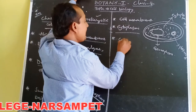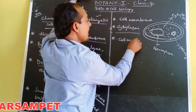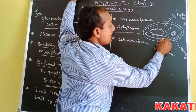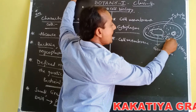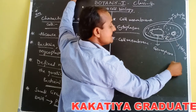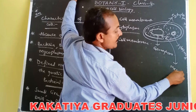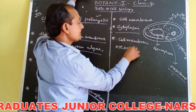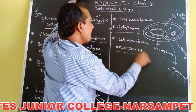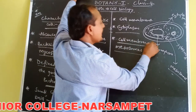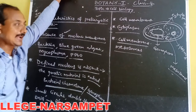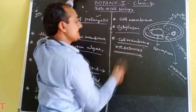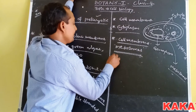The cell membrane forms infoldings called invaginations. These invaginations are called mesosomes. Mesosomes are the infoldings formed from the cell membrane of the bacterium cell.